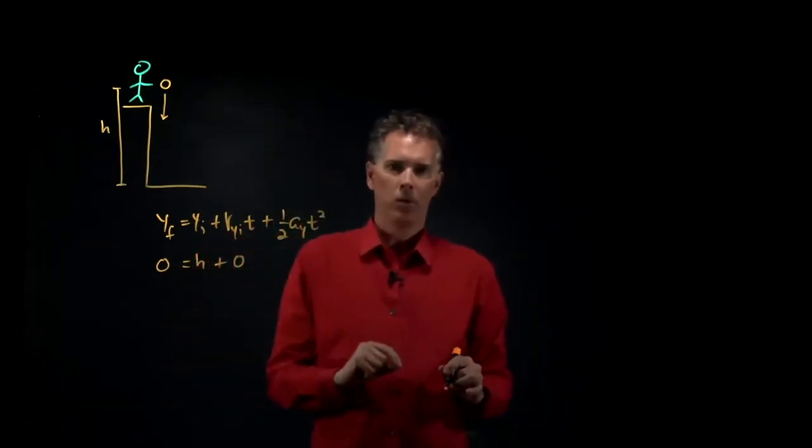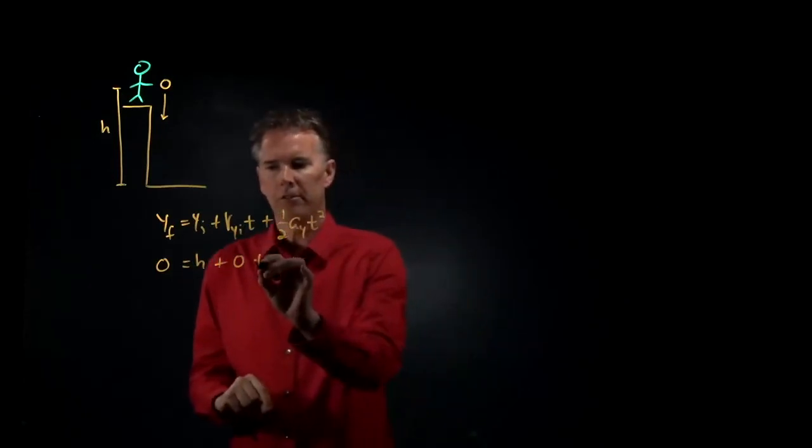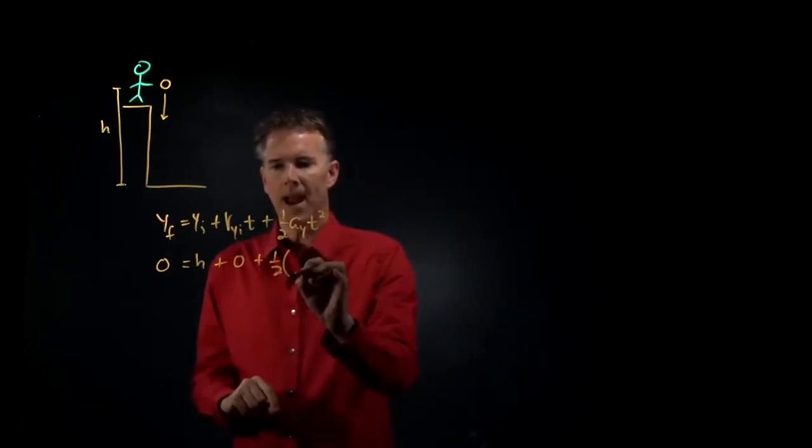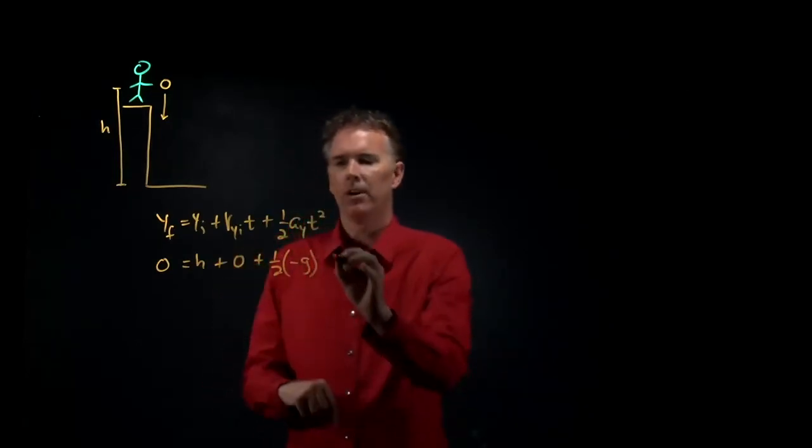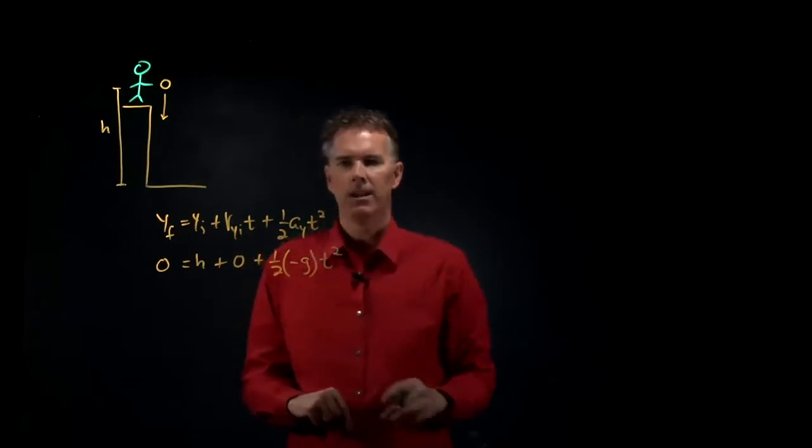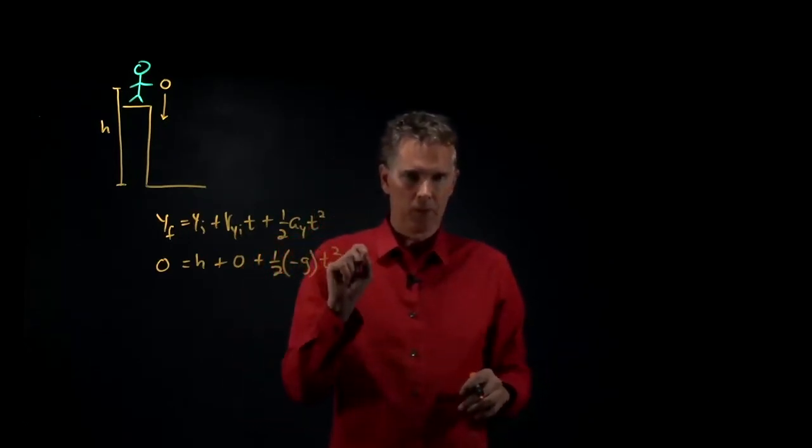What about a_y? We know near the surface of the earth, a_y has a magnitude of g but it's in the negative direction. So we put negative g right there, and that's the thing we want to measure.